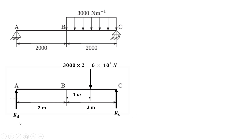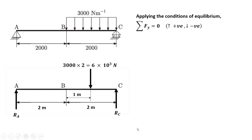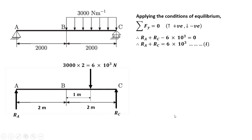Our first job is to calculate reactions Ra and Rc by applying the conditions of equilibrium. Taking summation of forces in the y-direction equal to zero, with upward forces positive and downward forces negative: Ra and Rc act upward (positive), while the 6000 Newton load acts downward (negative). Therefore Ra plus Rc equals 6 × 10³ Newton.